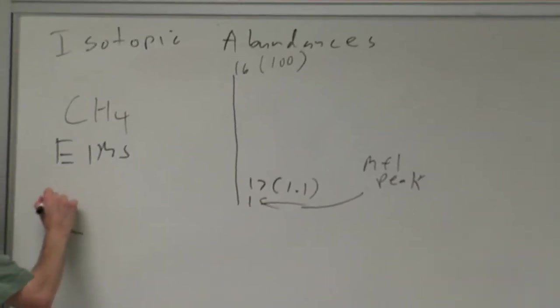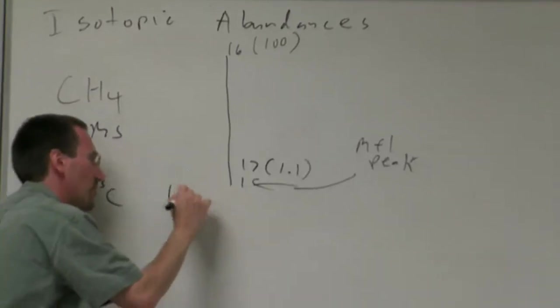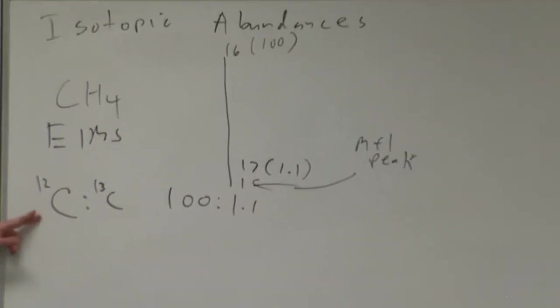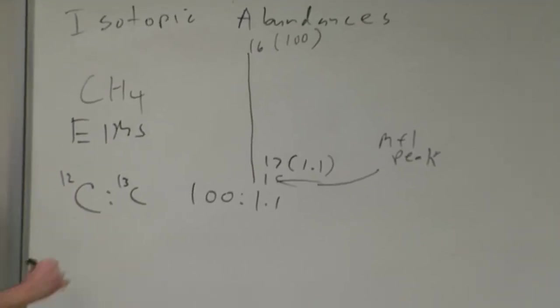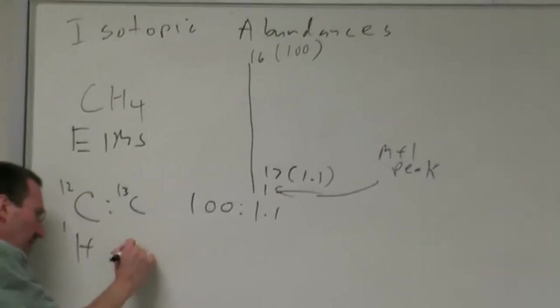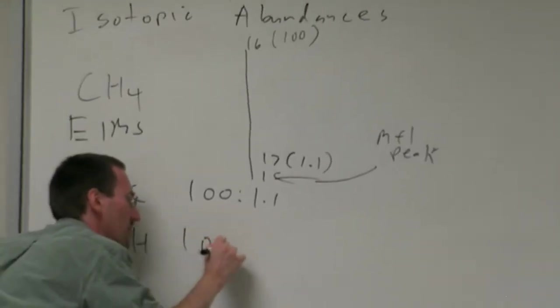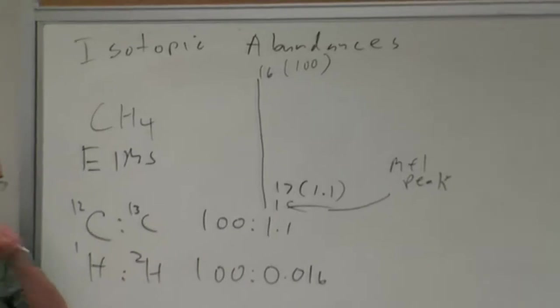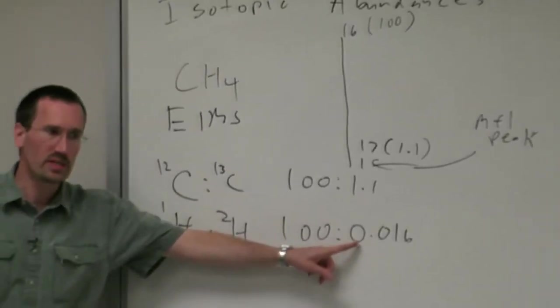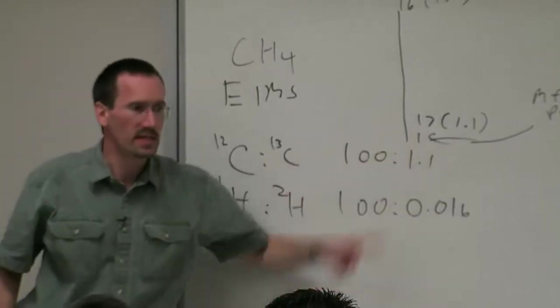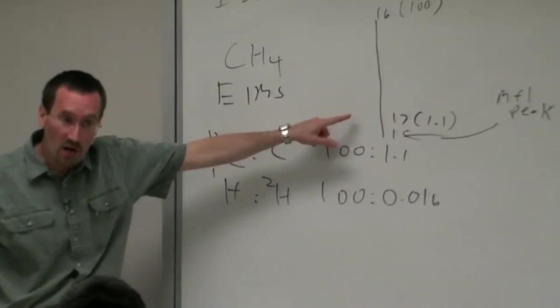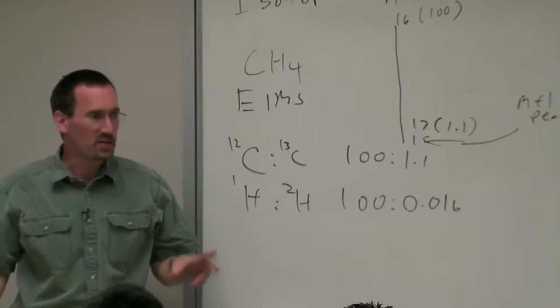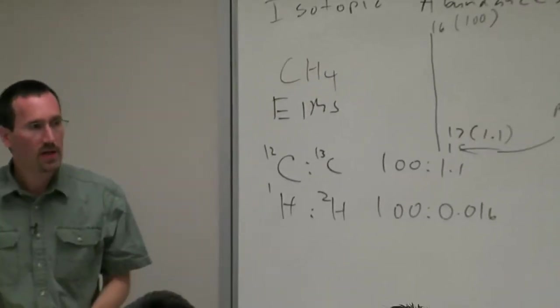We call this peak an M plus 1 peak, and it comes because you have C12 and C13 in 100 to 1.1 ratio. You have a minuscule amount of deuterium but it's really negligible because you have hydrogen to deuterium in 100 to 0.016 ratio. Essentially, even if you had a molecule with 100 hydrogens in it, they would only contribute 1.6 percent to the M plus 1 peak.